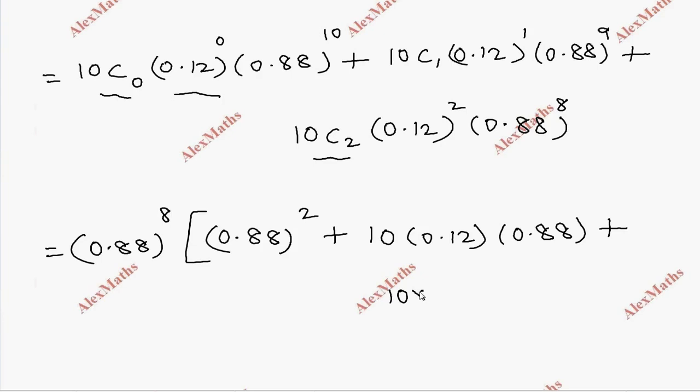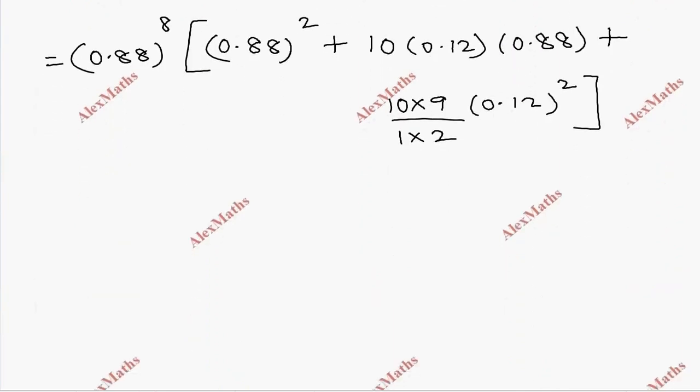So 10c2 is 10 into 9 by 1 into 2. This is 0.12 whole square. 0.88 whole power 8. If you calculate, this is 0.3596. This is 0.7744, plus this is 1.056. This is the value of the bracket.